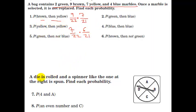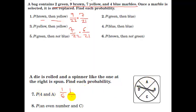A die is rolled and a spinner with four sections A, B, C, D is spun. Find the probability of four and an A. These two events are unrelated — the rolling of the dice and spinning of the spinner do not influence each other — so you just multiply the two probabilities together. The probability of a four on a dice is one out of six, and the probability of getting an A is one out of four. So the probability of both is one out of twenty-four.